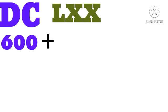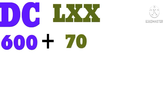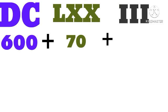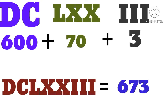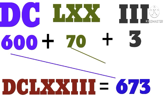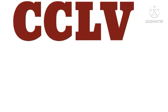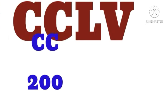DCLXXIII: D means 600, LXX means 70, III means 3. So 600 plus 70 plus 3, the answer is 673.